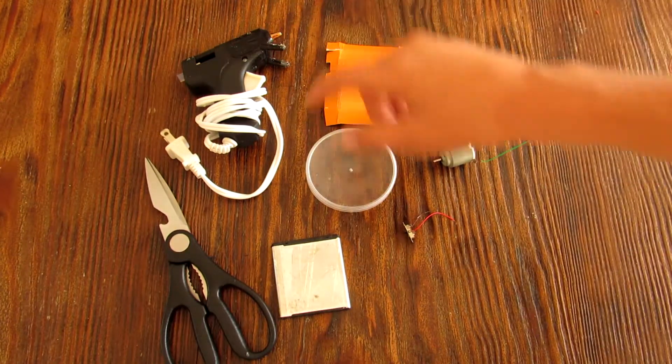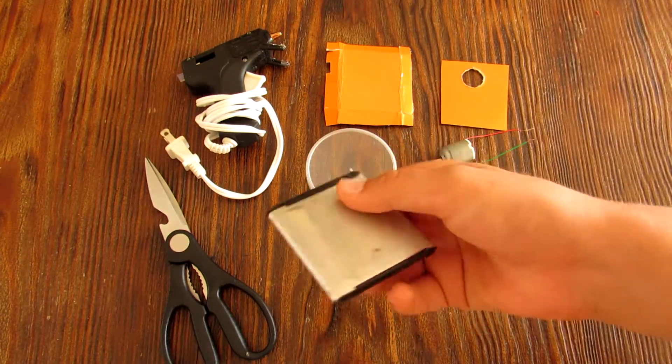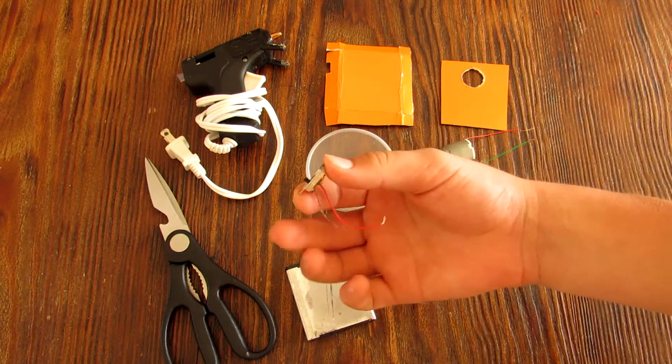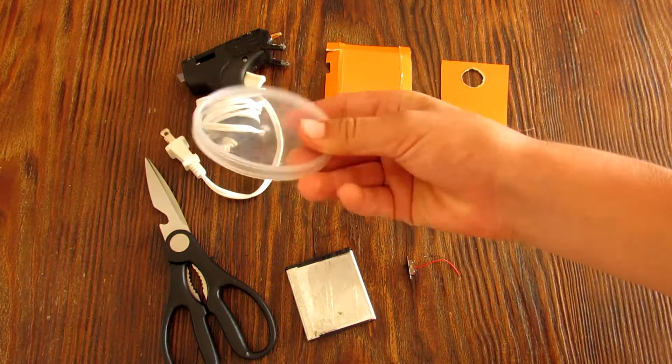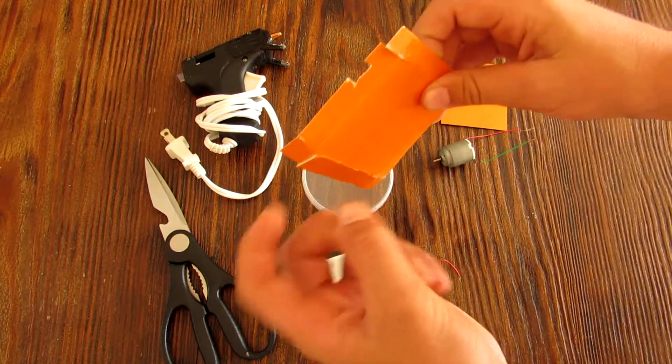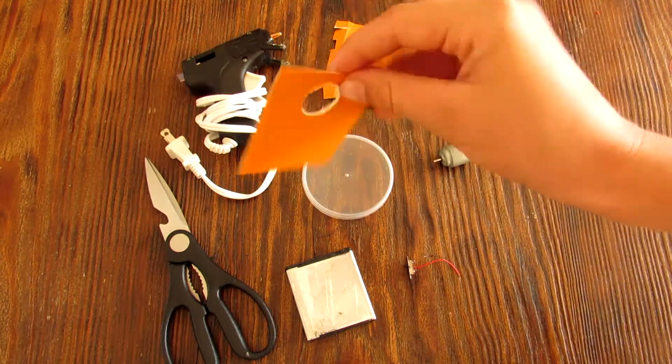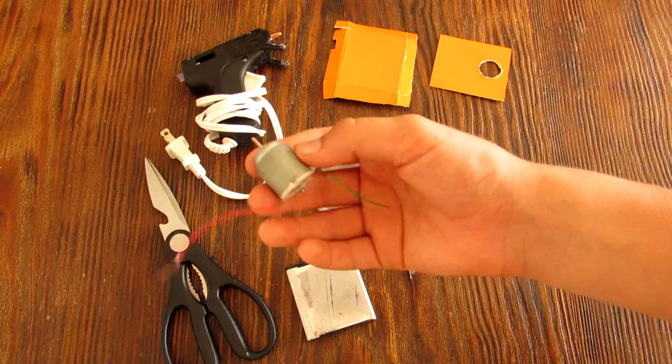So here's all the things you're going to need to make the fan: a pair of scissors, your hot glue gun, a phone battery, your on and off switch, a Pringles can lid, two pieces of cardboard that you'll be using to make the fan, and at last your DC motor.